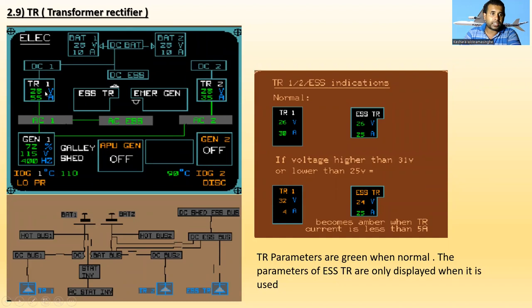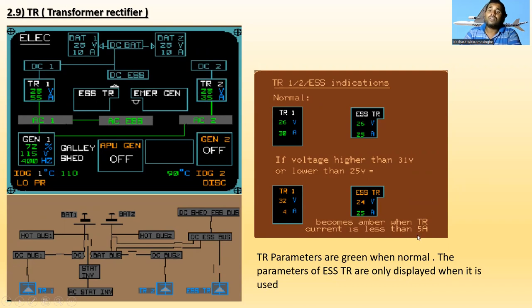Next is the TR — Transformer Rectifiers. TR1 is supplied from AC Bus 1, TR2 from AC Bus 2, and the Essential TR. TR1, TR2, and Essential TR indications are shown. If the voltage is higher than 31 volts or lower than 25 volts, the voltage appears accordingly and becomes amber. The current becomes amber if less than 5 amperes. TR parameters are green when normal, and Essential TR parameters are only displayed when it is being used.